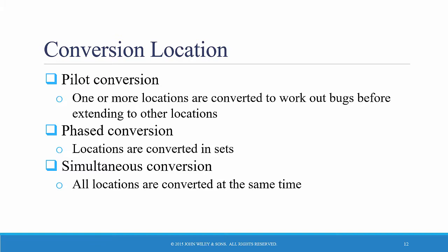A so-called pilot conversion selects one or more locations — that is, units or workgroups within a location — to be converted first as part of a pilot test. If the conversion at the pilot location is successful, then the system is installed at the remaining locations. With a phase conversion, a first set of locations is converted, then a second set, then a third set, and so on, until all locations are converted. And finally, with a simultaneous conversion, all locations are converted at the same time.